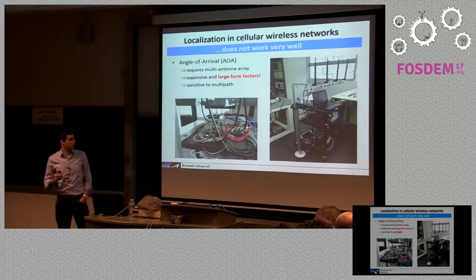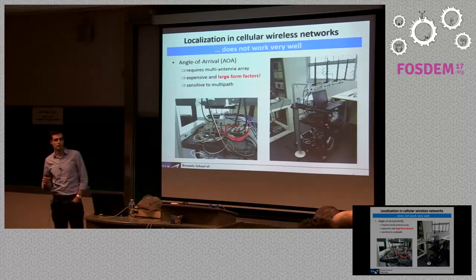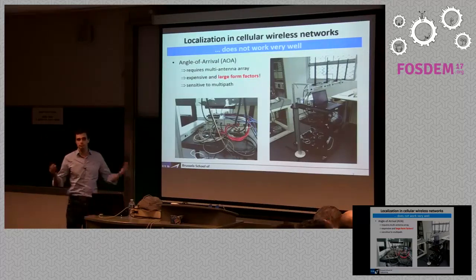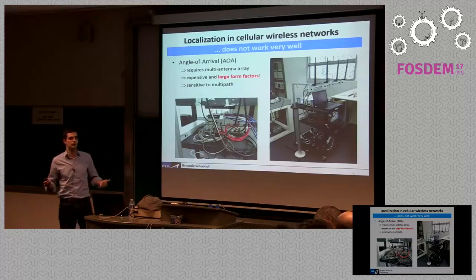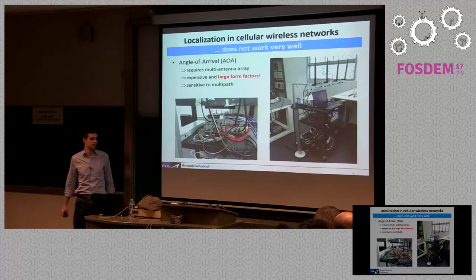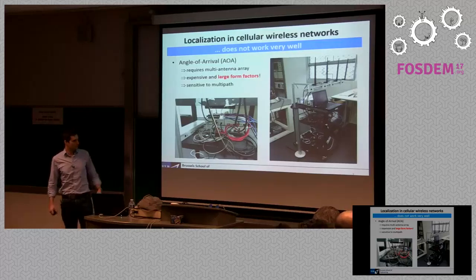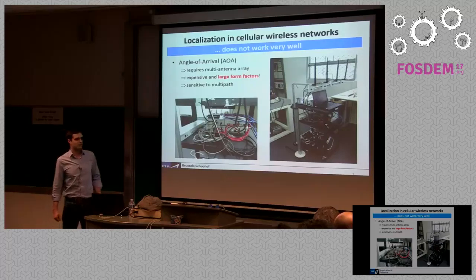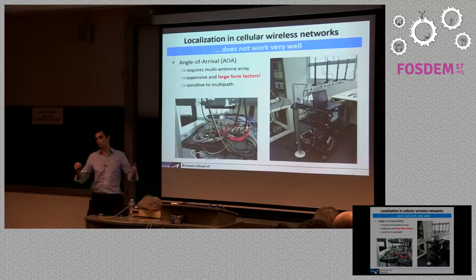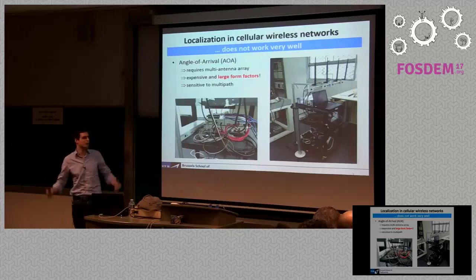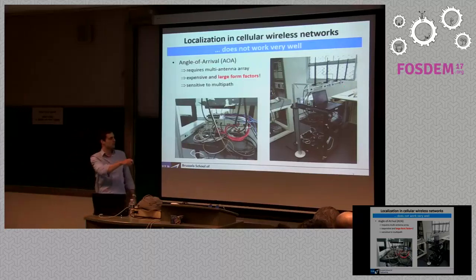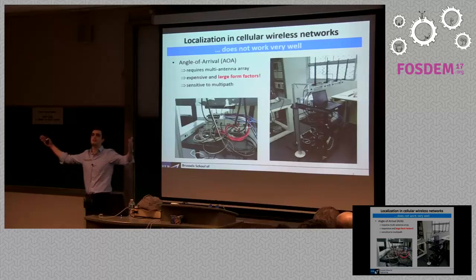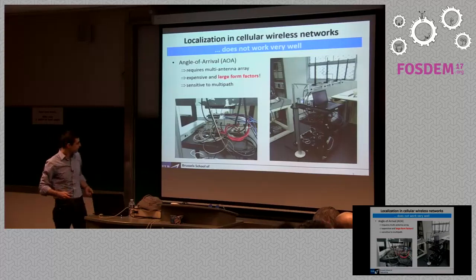What are the drawbacks of using multi-antenna arrays? There are two big drawbacks. The first one: they're quite expensive. If you have four antennas, you need four front ends, and even with software-defined radios, it's still a big financial threshold. The second problem is that these arrays are quite big — all antennas need to be separated by typically half wavelengths. At around one gigahertz with four antennas, you have an array of significant size, which is not practical to put in your cell phone or laptop.